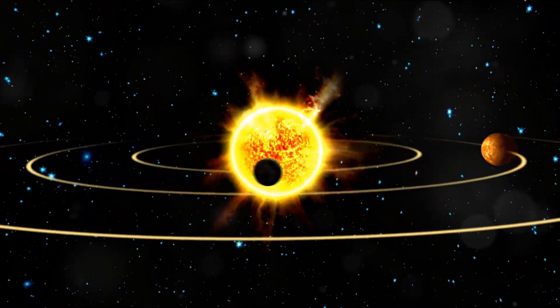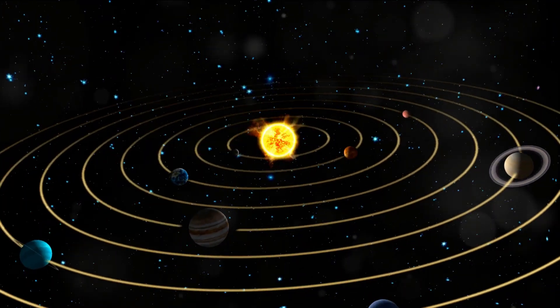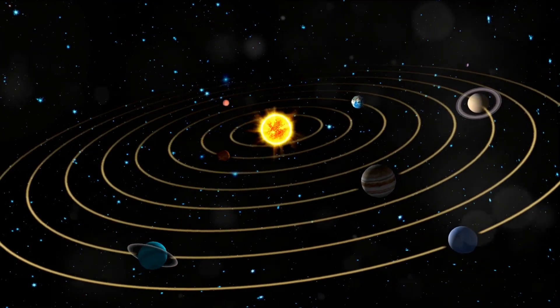Have you ever wondered about the vast expanse of our solar system? Picture this: eight distinct planets, each with their own unique characteristics and secrets. Our cosmic voyage begins with Mercury, the smallest planet, only a bit larger than our moon.